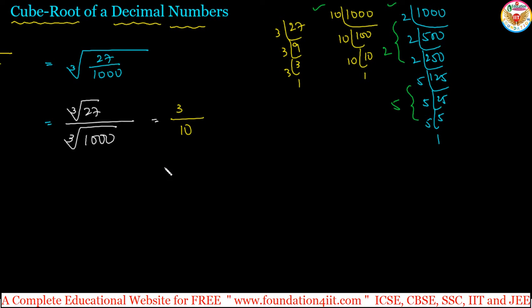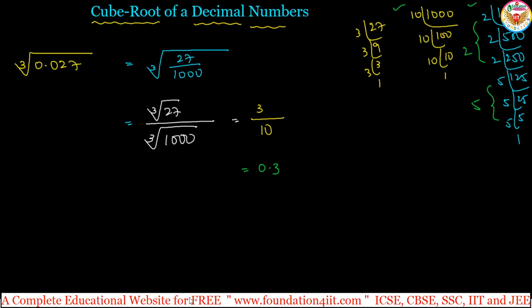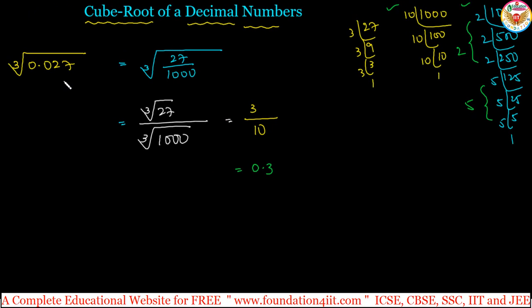So the answer is 3 by 10, which equals 0.3. The cube root of 0.027 is 0.3.